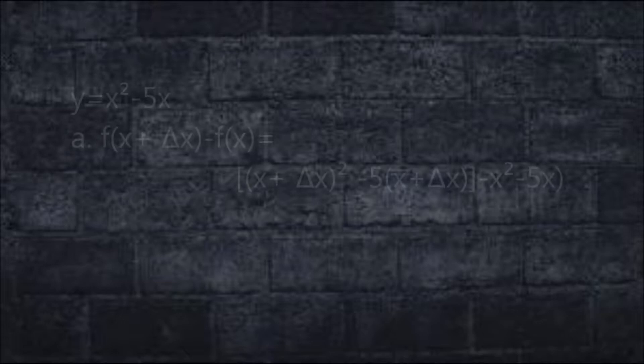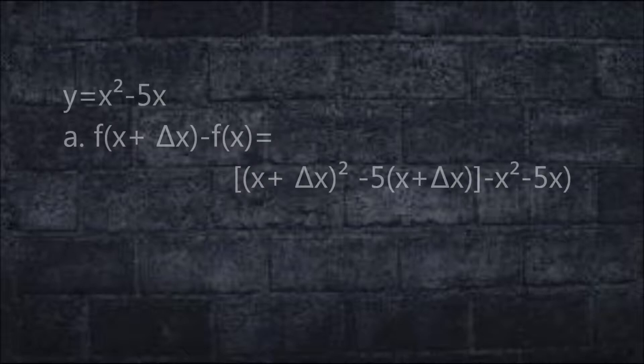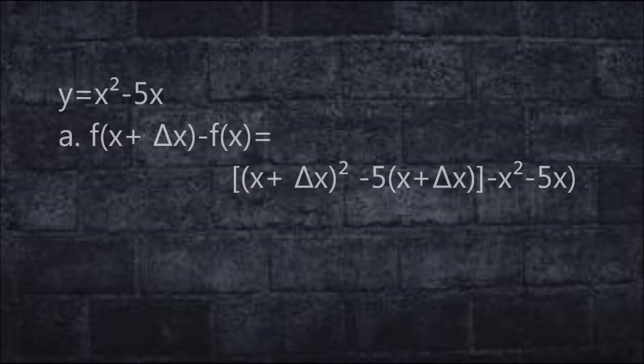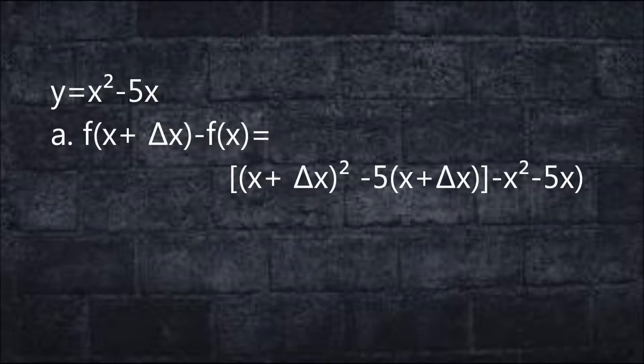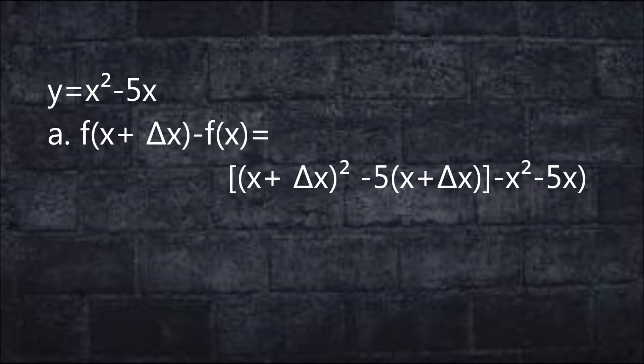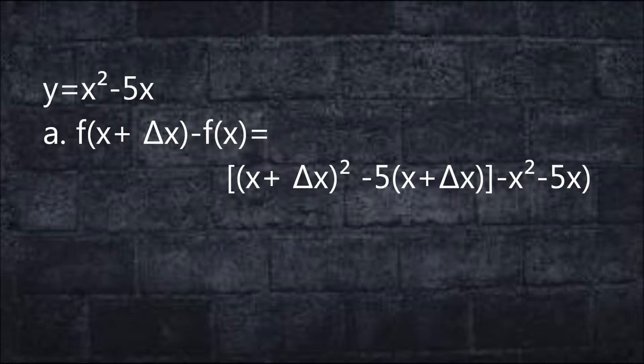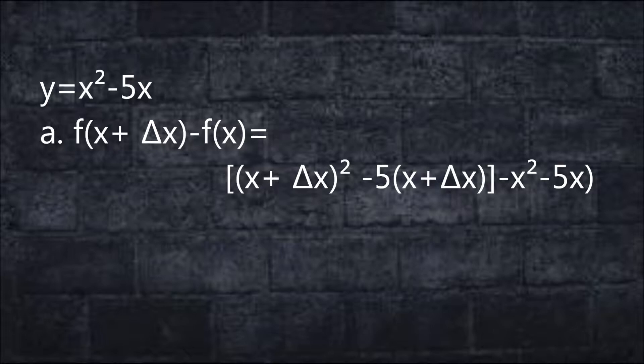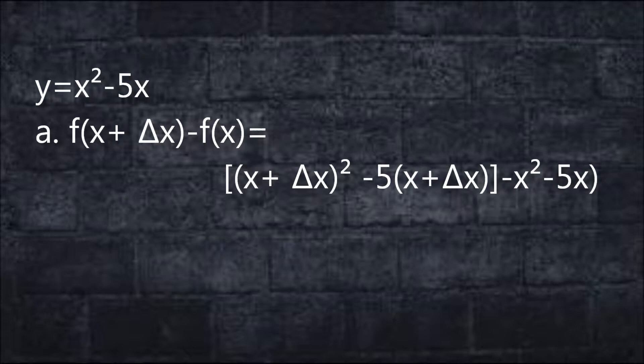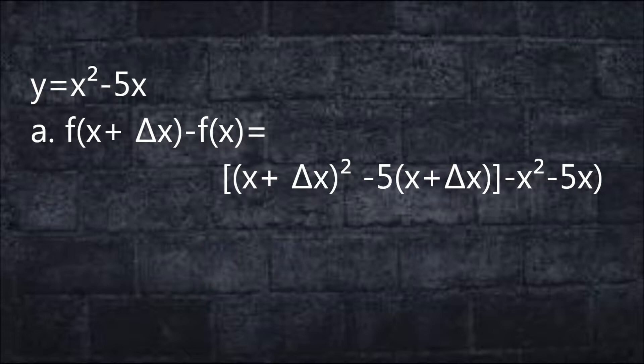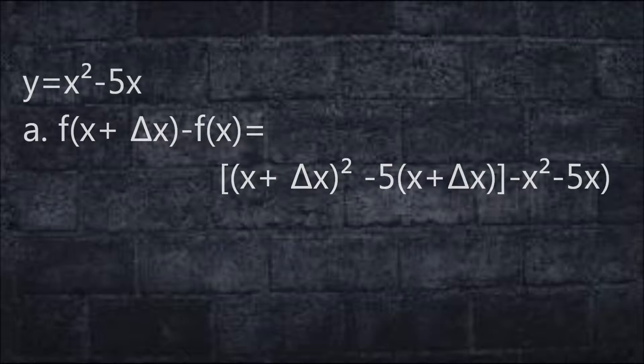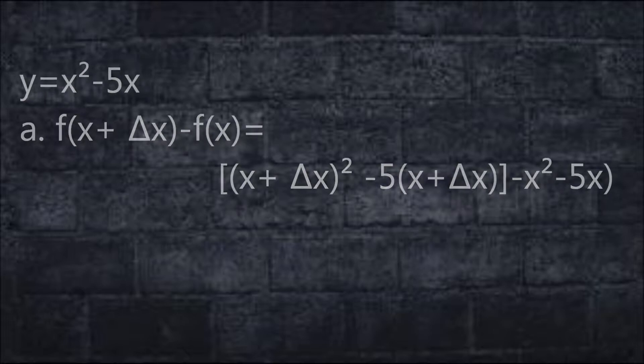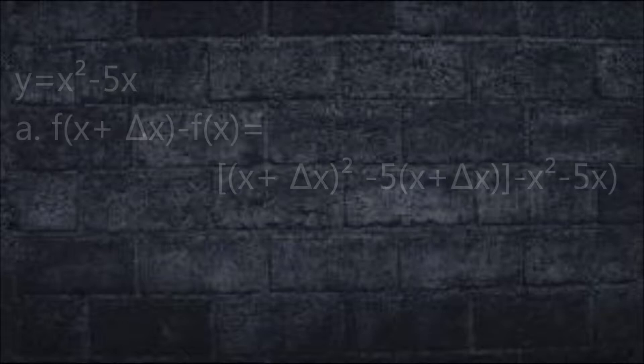So first we're gonna solve letter a. We'll substitute x plus delta x into the value of y, which is x squared, and then the same for 5x. We substitute x plus delta x. Then copy the function of x which is x squared minus 5x.